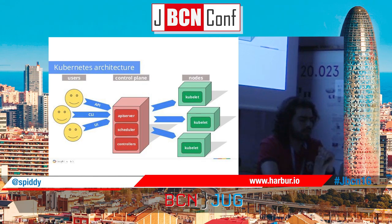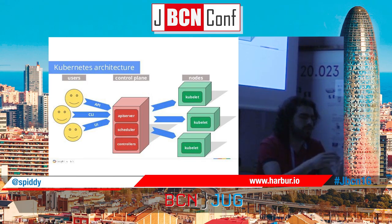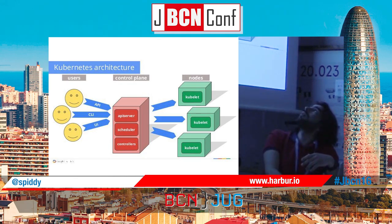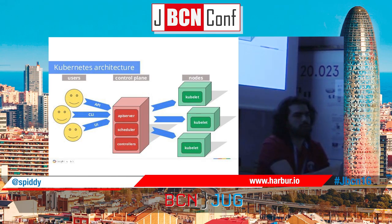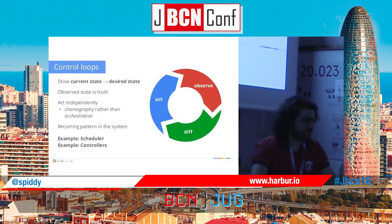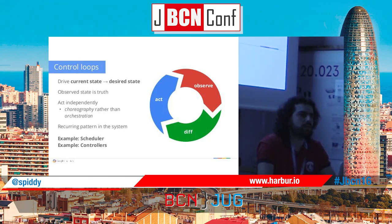The Kubernetes architecture has three main components. The API server is the gateway through which everything you do with Kubernetes passes. The scheduler is responsible for scheduling your pods onto specific nodes — machines in your cluster. The controllers monitor your state and act on your behalf when there is a change, making sure the actual state converges to your desired state. This is done via control loops: observe, diff, and act — if there are differences between the desired and actual state, it acts to reconcile them.